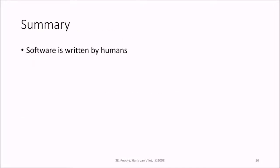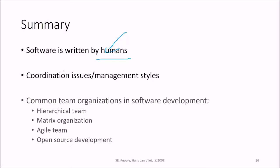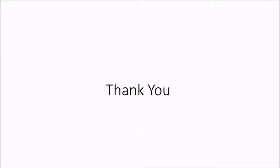In summary, when managing people, remember that software is written by humans. We've seen various coordination issues and management styles - we discussed two of them. Common team organizations in software development include hierarchical organization, matrix organization, agile teams, and open source development. These are key issues in software development with respect to people and human resources. Thank you.